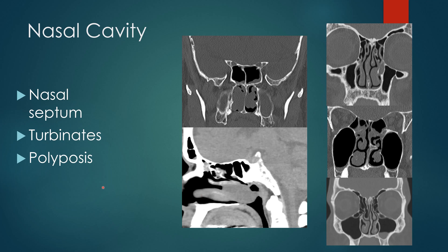For the nasal cavity, you want to evaluate the nasal septum — is it in the midline, is it bowed to the right, is there an associated nasal septal spur? You want to look at the nasal turbinates: superior, middle, and inferior. There is a variant called a concha bullosa, or an aerated middle turbinate, that can contribute to osteomeatal complex dysfunction. You can also get nasal polyposis — polypoid soft tissue density material within the nasal cavity. The sagittal view is helpful to confirm polyposis, as it separates the soft tissue from the adjacent turbinates and distinguishes it from mucosal thickening.